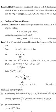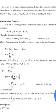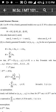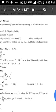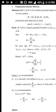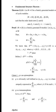Proof: Since M is not equal to {0}, it is a finitely generated D-module. Let x1, x2, ..., xn be the set of generators of M. Then M = Dx1 + Dx2 + ... + Dxn.